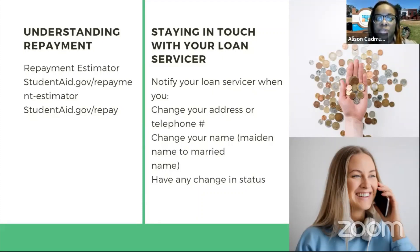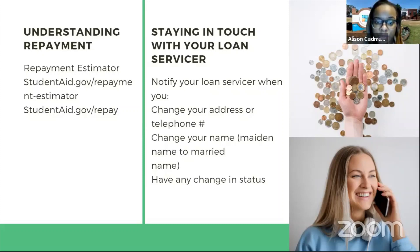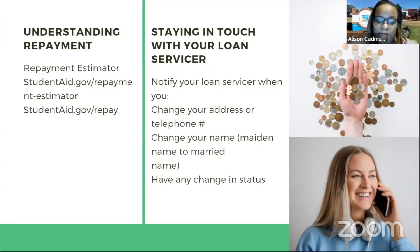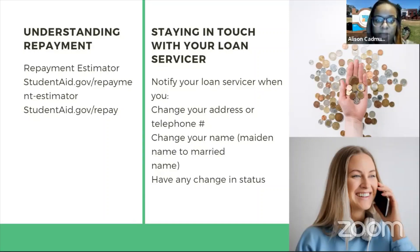Always stay in touch with your loan servicer and notify them when you change your address, telephone number, or name — such as going from a maiden name to a married last name — or when you have any change in status. Some students receive a deferment but are no longer eligible based on their income requirements.